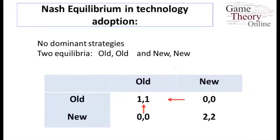Let's take a look at another example. This is one where two players have to both choose technologies — they can either choose an old technology or a new technology. They benefit from coordinating, so I'd like to match my technology use to what the other people are doing — a friend, a co-author, somebody I'm exchanging files with. I want a compatible system. So we can either both use the old system or both use the new system. Those are going to turn out to be the natural equilibria here.